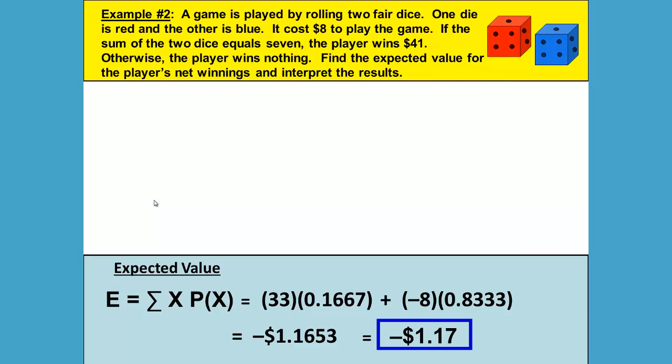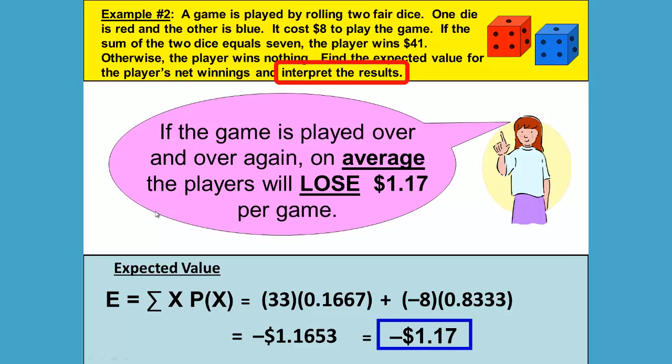Now we'll need to interpret the answer that we just got. The expected value is the long-term average, so if the game is played over and over again, on average, the players will lose $1.17 per game.